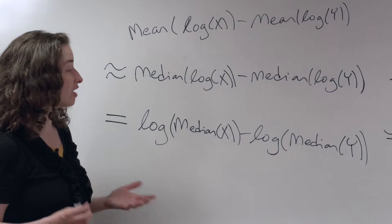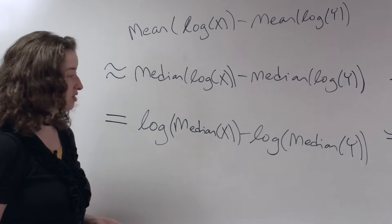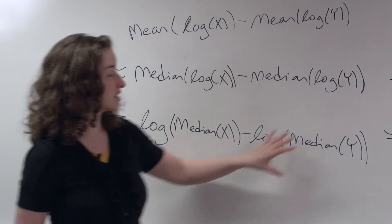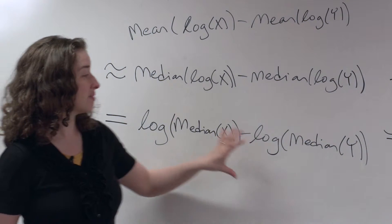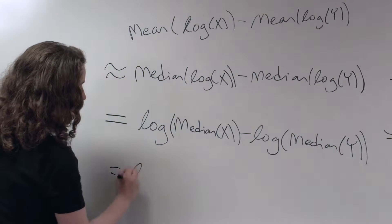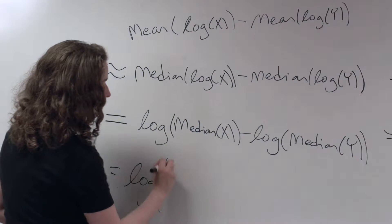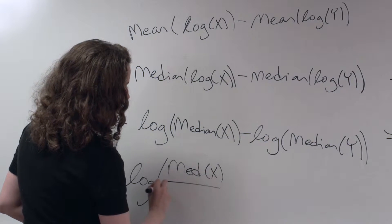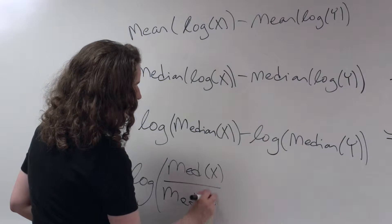Let's remember back to the log rules that we learned when we were first exposed to logs. The log of one quantity minus the log of another quantity, the log of a minus the log of b is equal to the log of a over b. This quantity is equal to the log of the median of x divided by the median of y.